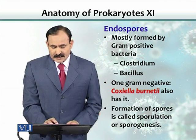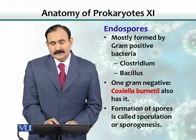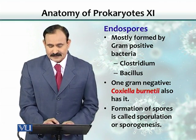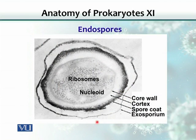The formation of spores is called sporulation or sporogenesis. This is the picture of a spore. There is an outer layer which we call exosporium, and then the second inner layer is the spore coat.